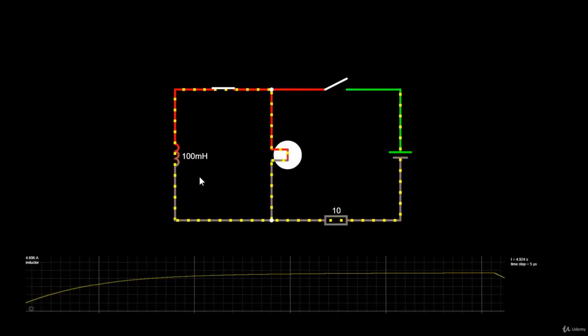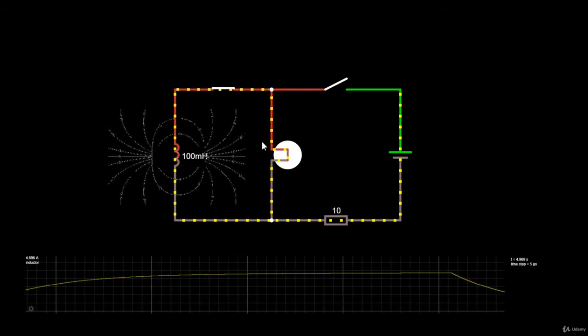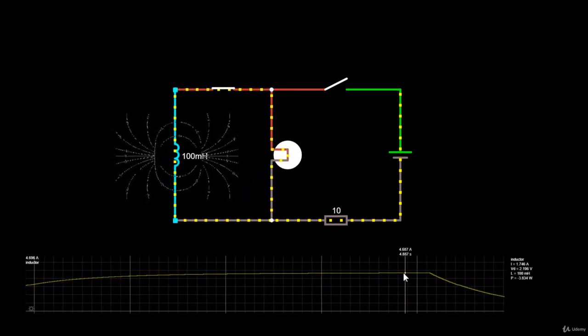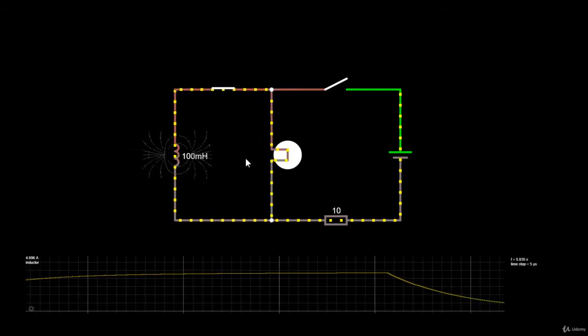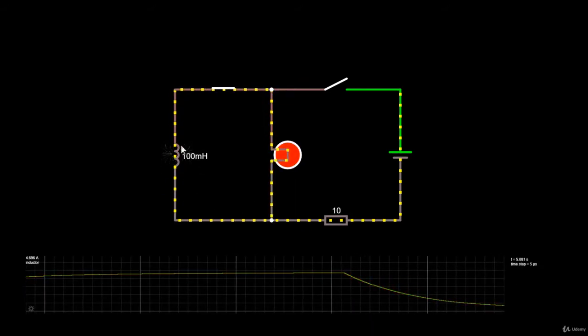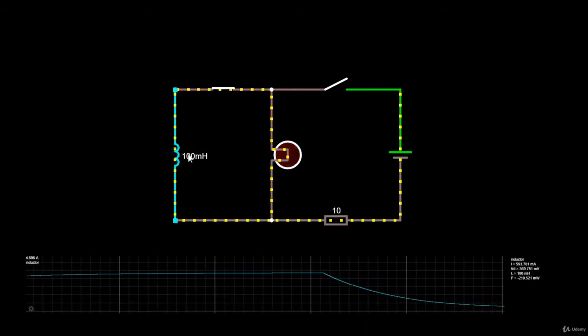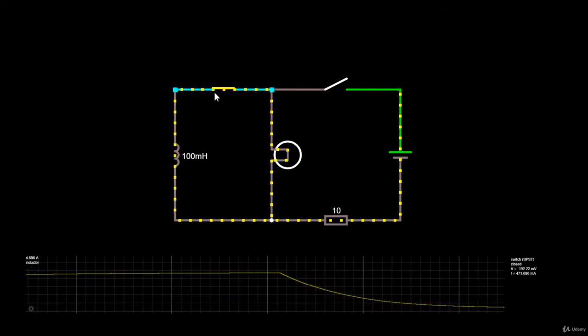When the switch gets opened, the magnetic field around the coil keeps current flowing in the coil until the field collapses, and the current keeps the bulb lit for a period of time, even though the switch is open. In other words, an inductor can store energy in its magnetic field, and an inductor tends to resist any change in the amount of current flowing through it.